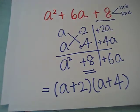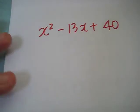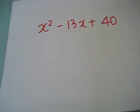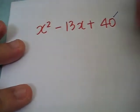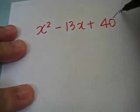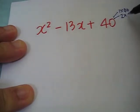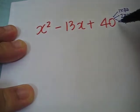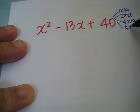Now, let's try another one. We have x squared minus 13x plus 40. Let's list down the possible pairs of factors. 1 times 40, 2 times 20, 4 times 10,